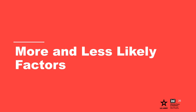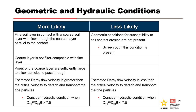This table addresses both the geometric and hydraulic conditions for initiation of soil contact erosion. It can be used as a starting point, but the risk team must develop project-specific more likely and less likely factors to guide subjective probability estimation. The bullets indicate to consider the hydraulic condition for initiation when the ratio of D15 of the filter to D85 of the base is greater than 7.5.